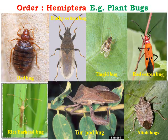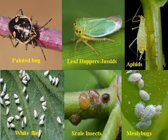Order Hemiptera includes different plant bugs: red bug, shield bug, stink bug, and various others — all major pests of cereals and pulses. It also covers leafhoppers, jassids, aphids, mealybugs, green scales, and whiteflies, all from this same order.